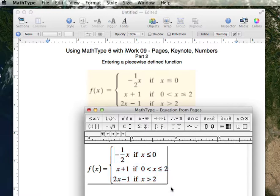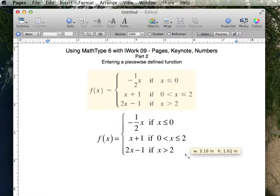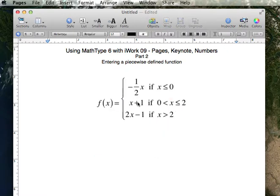So, there's our equation. It's all set, ready to return to our document. Expand it, make it bigger if you like. Delete the fuzzy looking one, and there you are. That's how you enter a piecewise defined function in MathType.